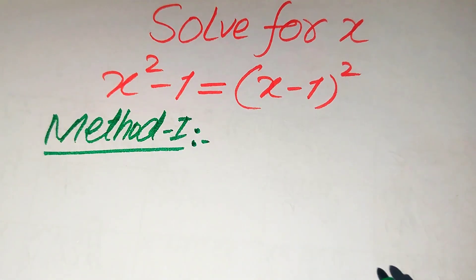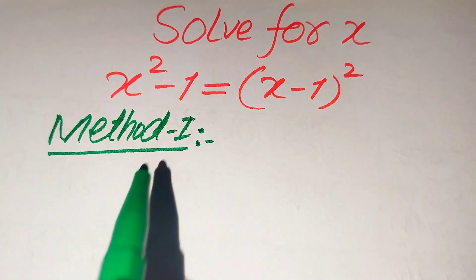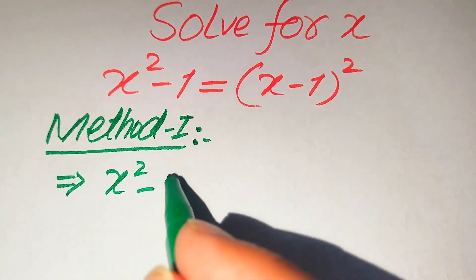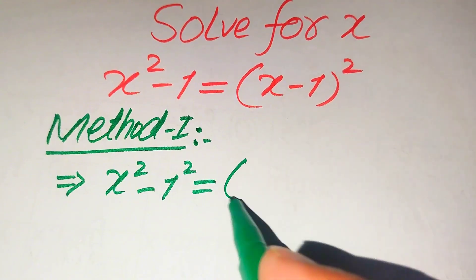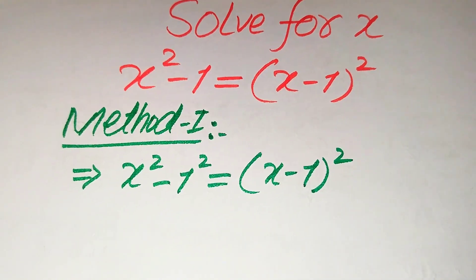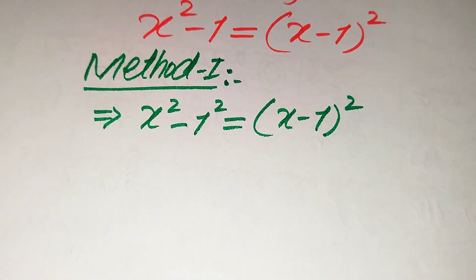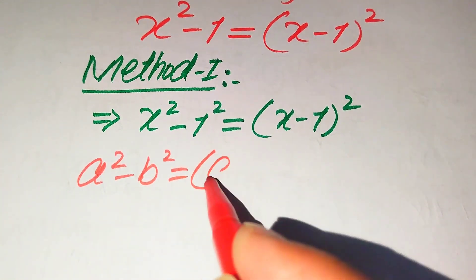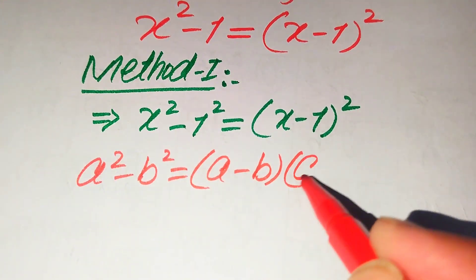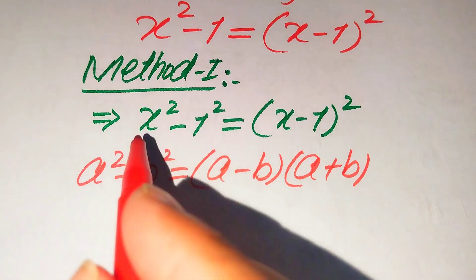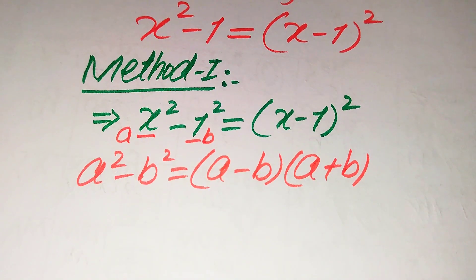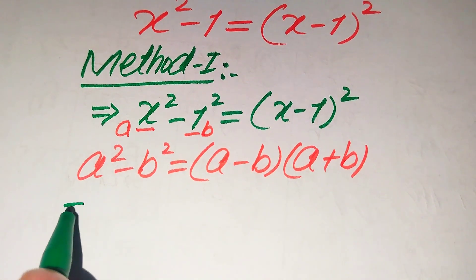Now we move towards the solution from the first method. In the first method, we rewrite our above equation: on the left hand side we have x² - 1, and we write this as x² - 1² equals (x - 1)². Here on the left hand side we use the algebraic formula: a² - b² equals (a - b)(a + b).